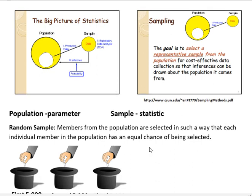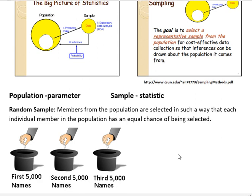So one way that we talk about sampling is to do a random sample. For instance, if the members from a population are selected in such a way that each individual member in the population has an equal chance of being selected, that's a random sample.